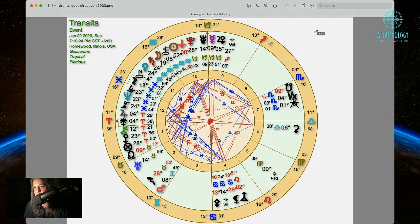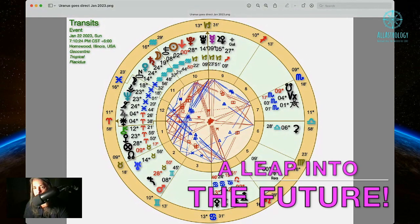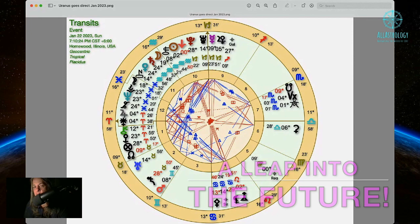Alright, so here we are. Here's my cursor in the top right-hand corner. This is different software. Now we're going to look for Uranus again, but before we do that, let's look at the date.